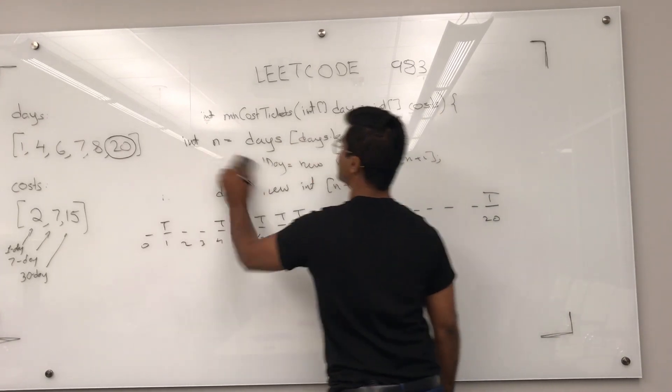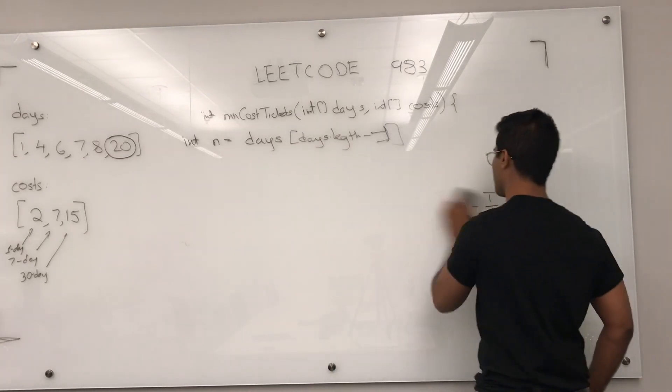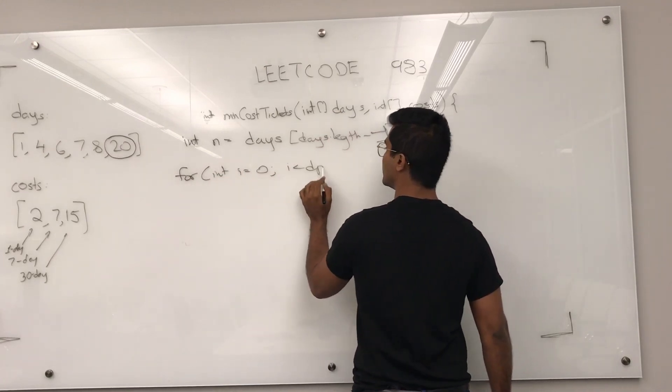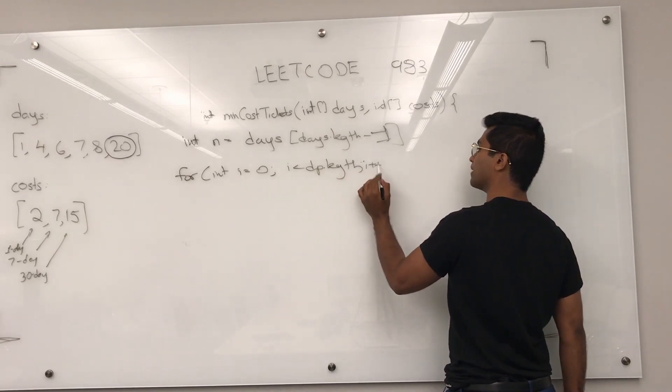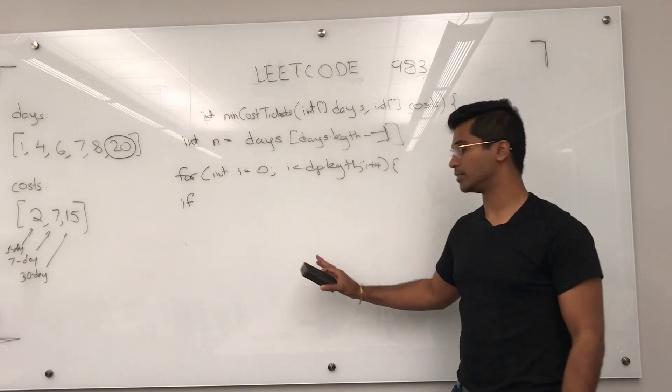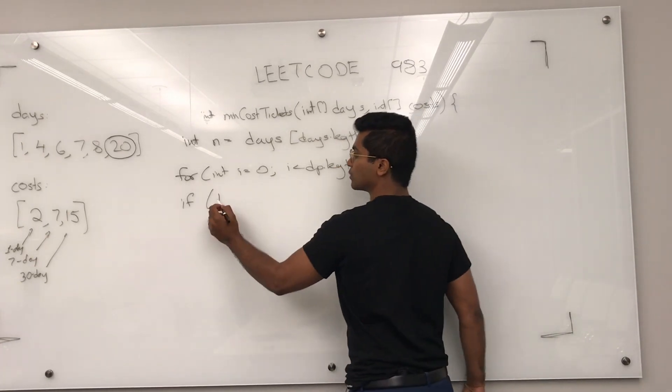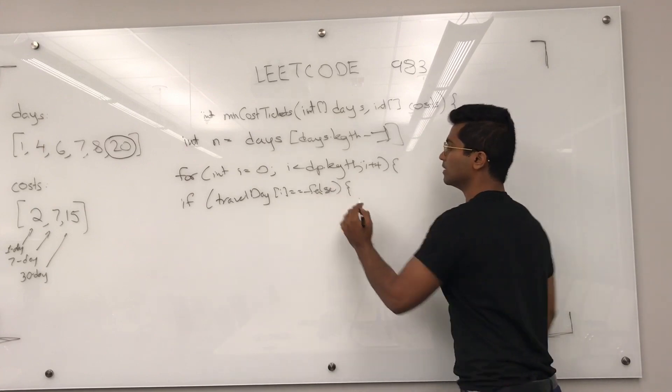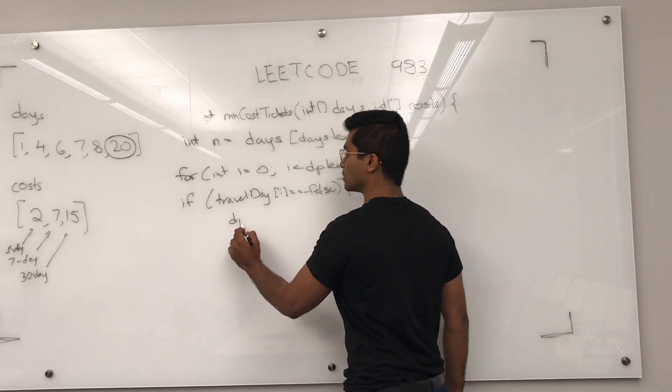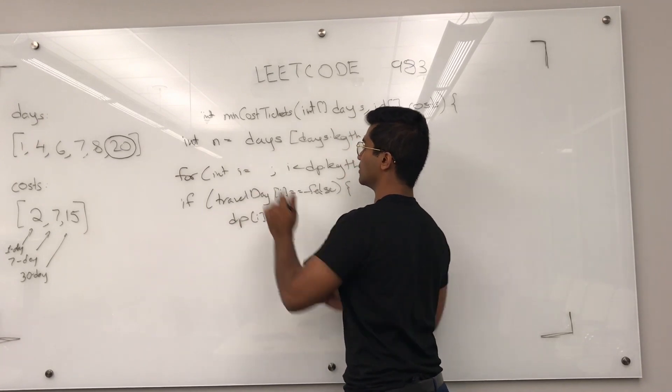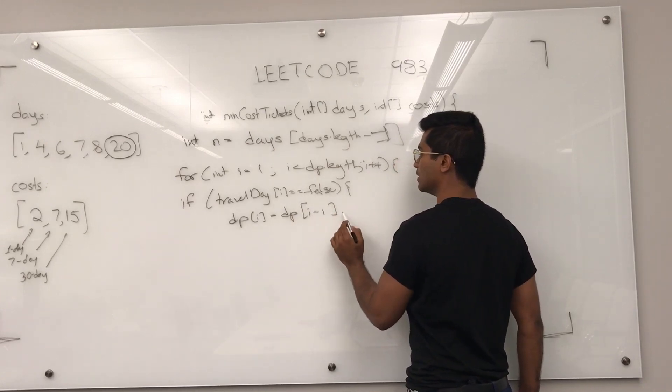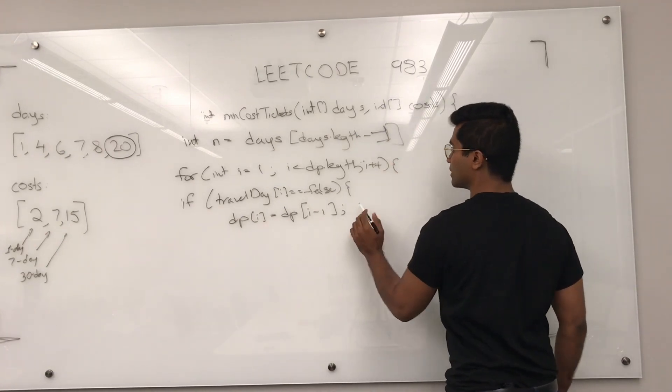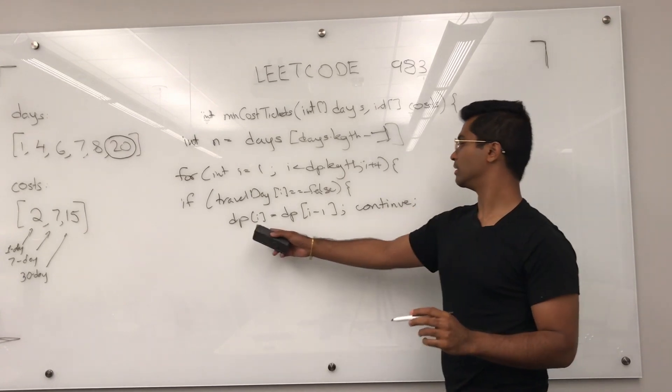So let's get into the code. Now, we're going to be for int i is equal to 1, i is less than DP dot length, i plus plus. Now, keep in mind the travel day array I just filled with trues. If we don't have to travel that day, if the travel day of i is false, then I don't have to buy any tickets, I don't have to pay any more money. My cost for that day is just DP of i minus one.